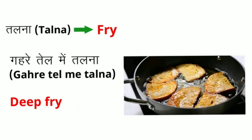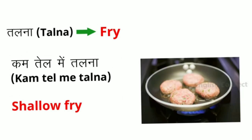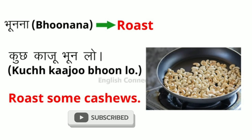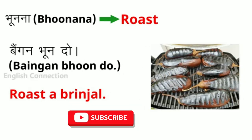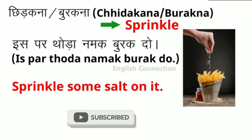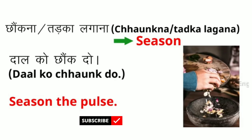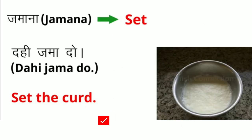Another use of 'fry': deep fry. And another use: shallow fry. The next word is 'roast.' Example: roast some cashews. Another example: roast a brinjal. The next word is 'sprinkle.' Example: sprinkle some salt on it. The next word is 'season.' Example: season the pulse.